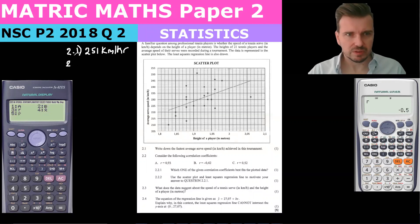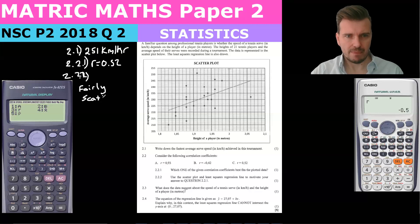That was 2.1, and then 2.2.1 says which one of the given correlation coefficients best fits the plotted data. We can see it's fairly scattered and it is sloping upwards. So we know it's not going to be 0.93, that's too accurate. Negative, it's not because that would slope downwards. So we know that it's r equals 0.52. We would say fairly scattered and sloping upwards.